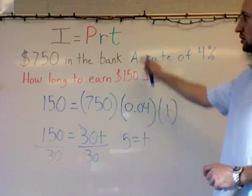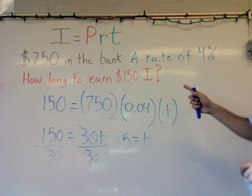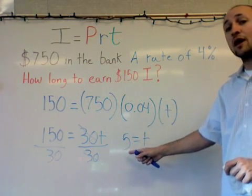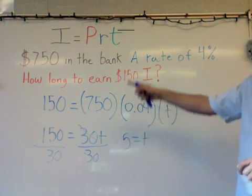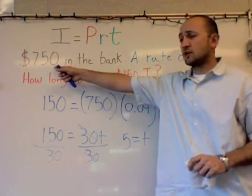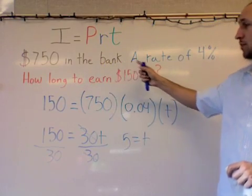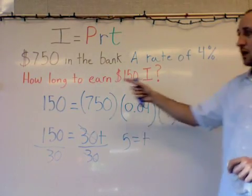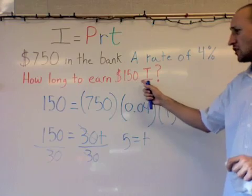So what that means in this whole big picture is that the amount of time that it takes is 5, but 5 what? It's 5 years. So if you put $750 in the bank, and the bank gives you an interest percentage rate of 4%, how long will it take you to earn $150 in interest?